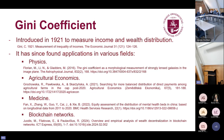The Gini coefficient was first introduced in 1921 as a measure of income and wealth distribution. Since then, it has been used in many different fields such as physics, agricultural economics, medicine, blockchain networks, and many others. It was also applied in Lightning Network centralization research. The problem is that other research doesn't provide detailed instructions on data collection across layer one and layer two.